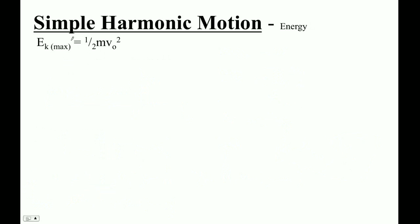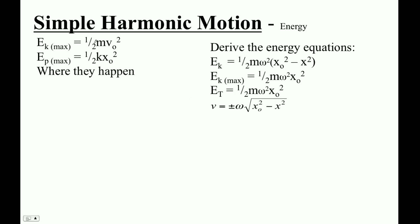The maximum kinetic energy of the object is going to be one-half m v-max squared. The maximum potential energy is going to be one-half k x-naught squared. So where do they happen? Maximum kinetic energy happens in the middle. Potential energy happens at the edges. If you knew the oscillator had 10 joules and 2 joules were potential, 8 joules would be kinetic.